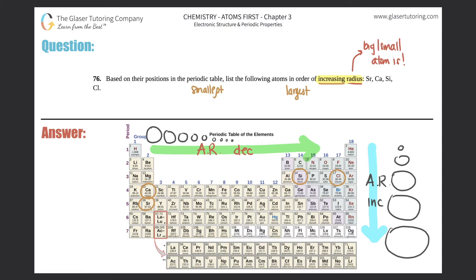Let's start with the group trend. As you go down a group, your atomic radius will increase. Calcium and strontium are in the same group, and as you go down, the atoms get larger. So strontium would be the largest of these two, while calcium would be smaller than strontium.